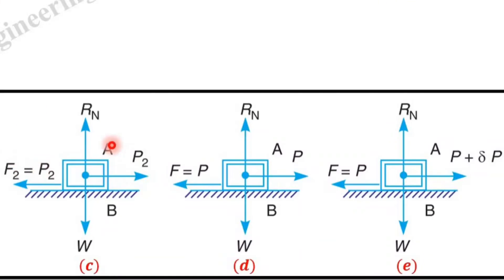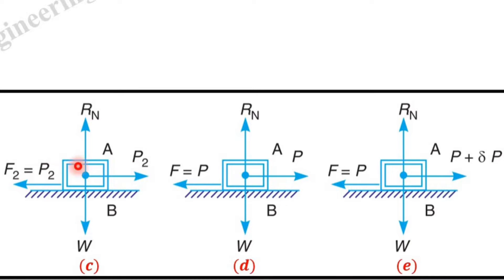If we now increase the applied force from P1 to P2, as shown in figure C, the body is still found in equilibrium. The friction force has also increased to a value F2, which is exactly equal to P2. Thus every time the effort increases, the force of friction also increases such that it becomes exactly equal to the applied force.